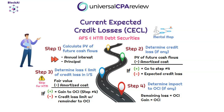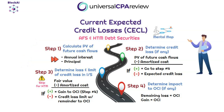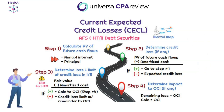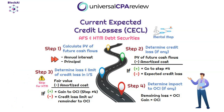Step one: calculate the present value of future cash flows. Step two: calculate the expected credit loss by comparing the present value of future cash flows to the amortized cost. Step three: calculate the fair value relative to the amortized cost to find the total loss. Step four: determine what portion of that loss goes to credit loss on the income statement versus other comprehensive income. We'll also walk through the journal entries even though we don't need to enter them in this simulation.